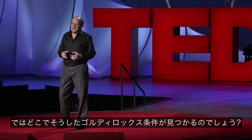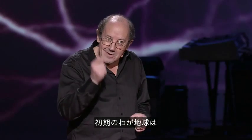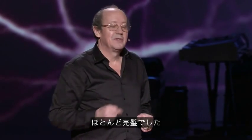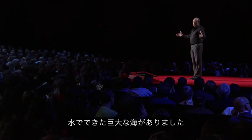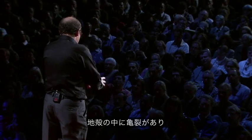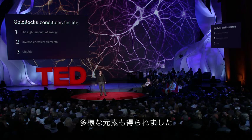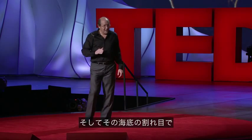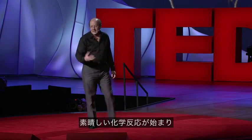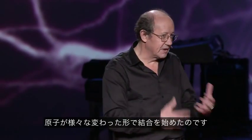Where do you find such Goldilocks conditions? Well, planets are great, and our early Earth was almost perfect. It was just the right distance from its star to contain huge oceans of liquid water. And deep beneath those oceans, at cracks in the Earth's crust, you've got heat seeping up from inside the Earth and a great diversity of elements. So at those deep oceanic vents, fantastic chemistry began to happen, and atoms combined in all sorts of exotic combinations.